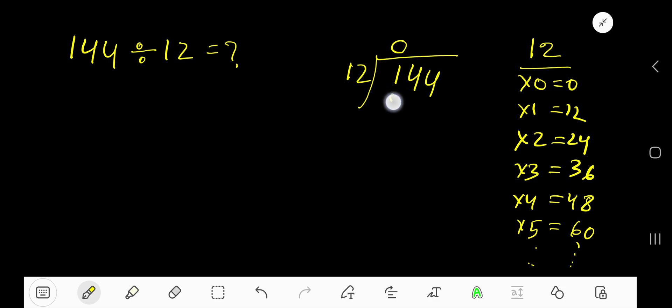0 times 12 is 0. Subtract from 1, bring down this digit 4. 12 goes into 14 how many times? One time. One time 12 is 12.